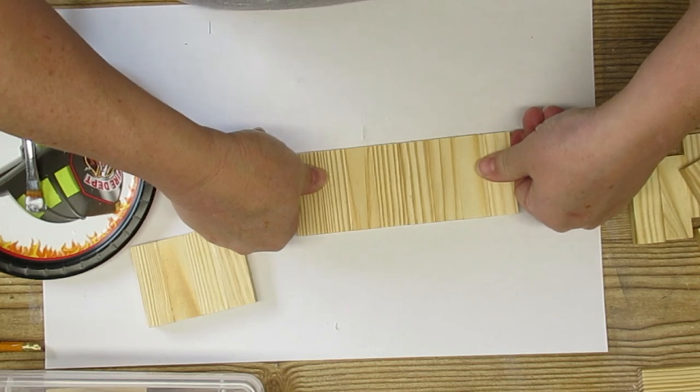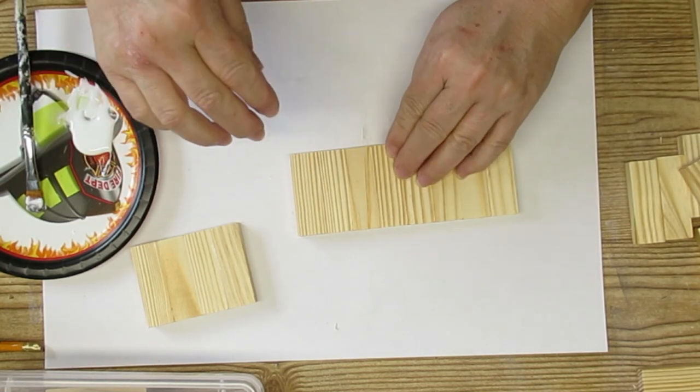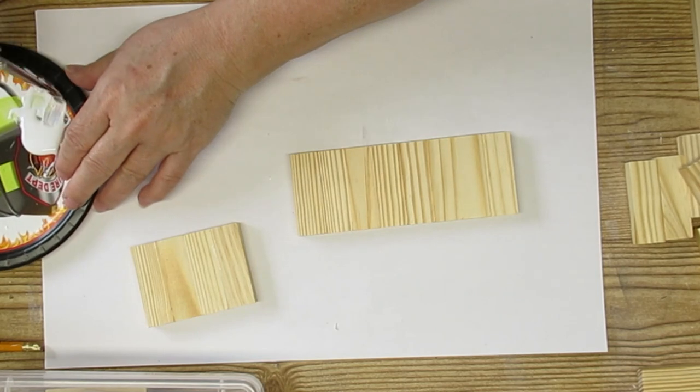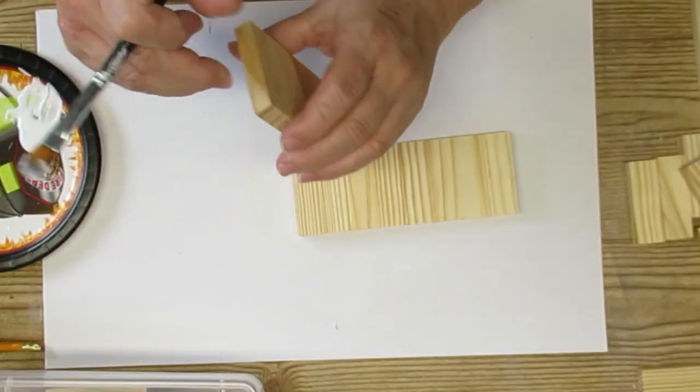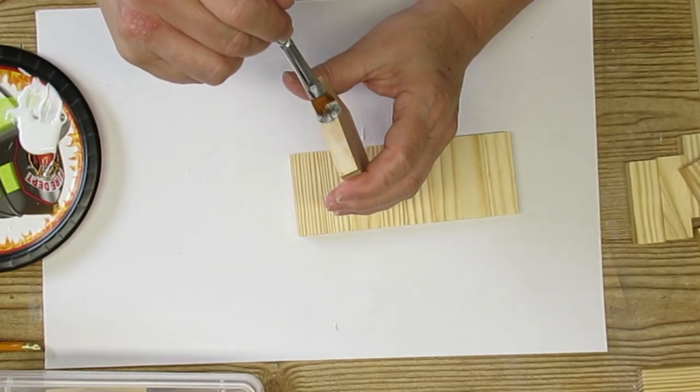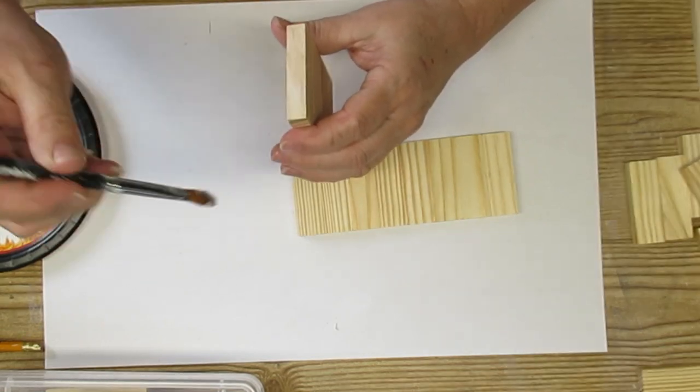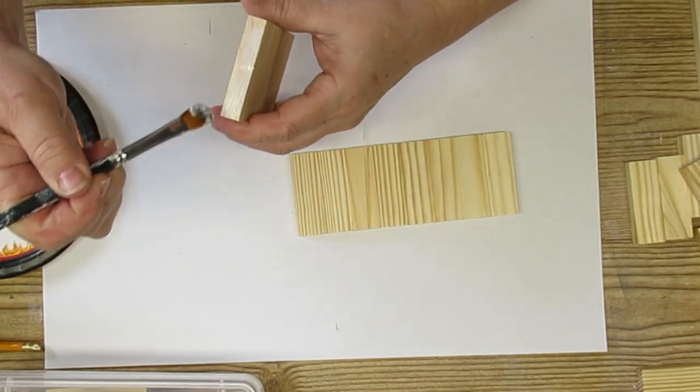To make sure they're really secure, I give them a good push from either end and if a little bit of that glue squeezes up in between, then I know I've got a really tight fit. Once I'm done with the 12, I'm going to set that aside to dry.